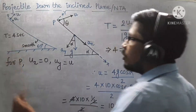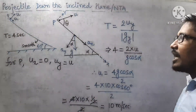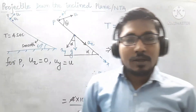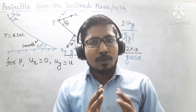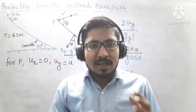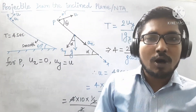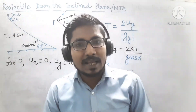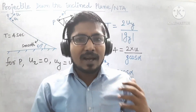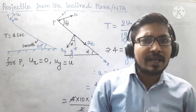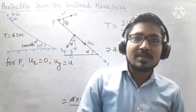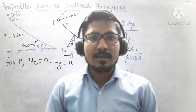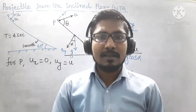So if you project particle P at 10 m/s perpendicular to the inclined plane, after 4 seconds particle P and particle Q will collide. By solving this numerical, you learned about projectile motion down the incline, collision conditions, and related concepts. Hope you enjoyed this video. If you want more concept-building numericals, please subscribe, like, share, and ask any doubts in the comment section. Thanks for watching — see you next time, goodbye!